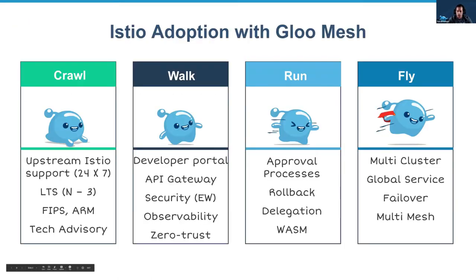Let's talk a little bit about Istio adoption that we see in the industry. We like to divide it into steps. The first step — the crawl step — is where people need support for upstream Istio, they're just testing it out, they need long-term support, and they're beginning to learn what service mesh means technically and operationally. The next step is the walk phase, where they add on more features like a developer portal, an ingress API gateway, MTLS for zero trust security, and observability features.